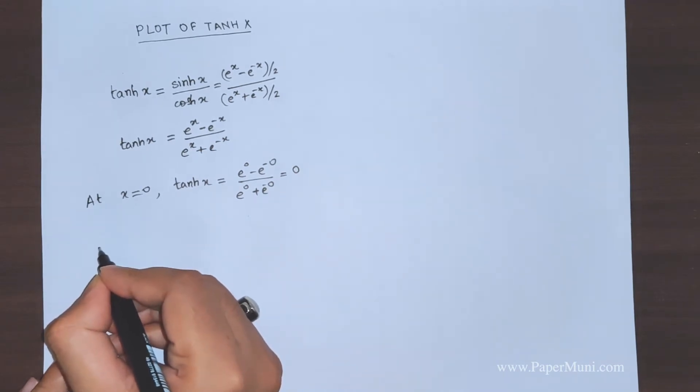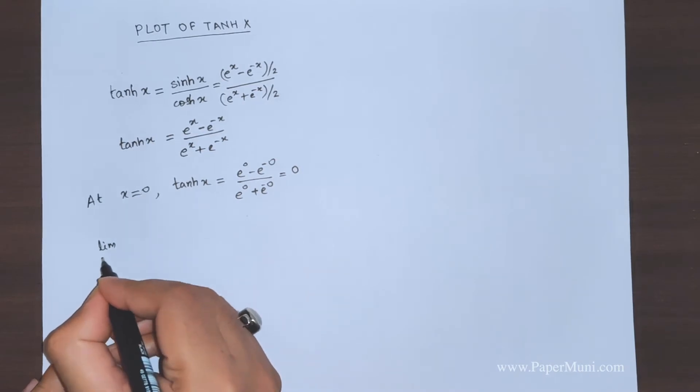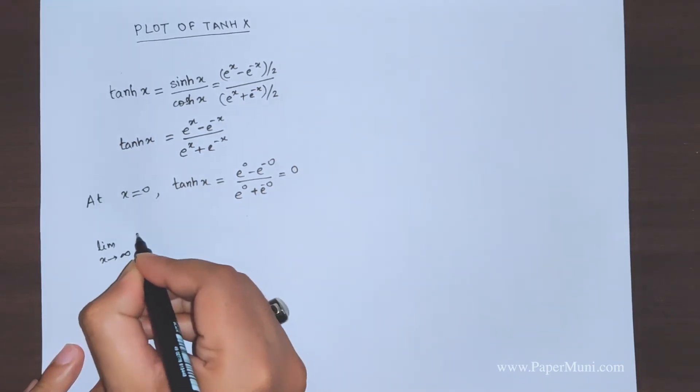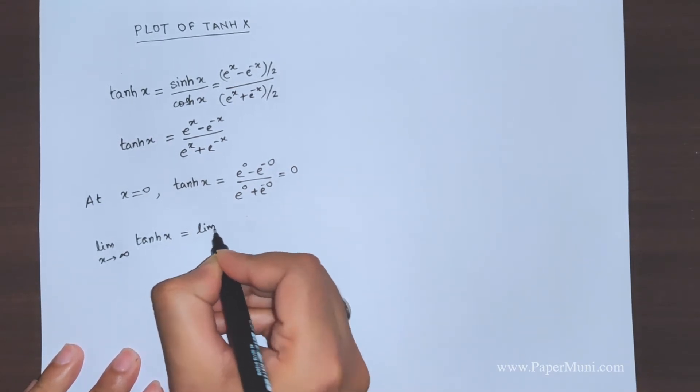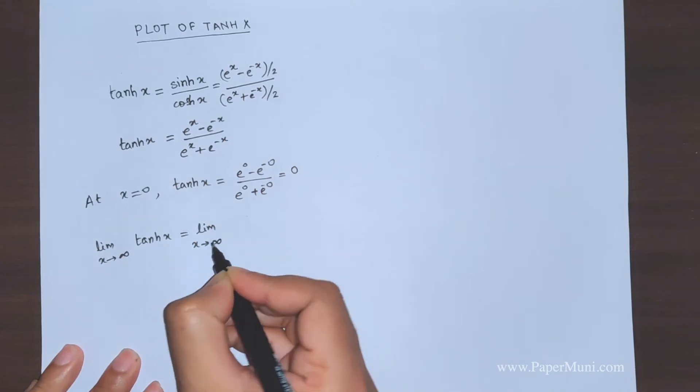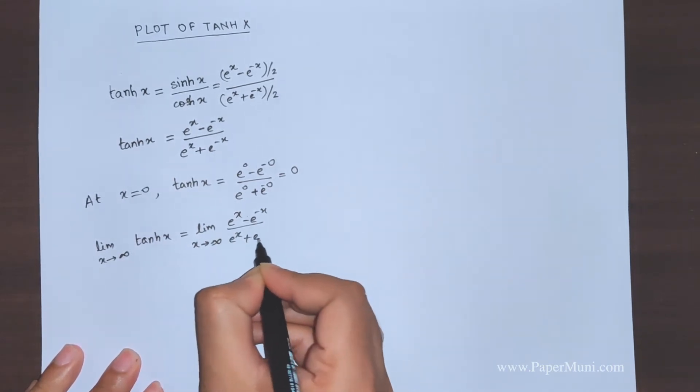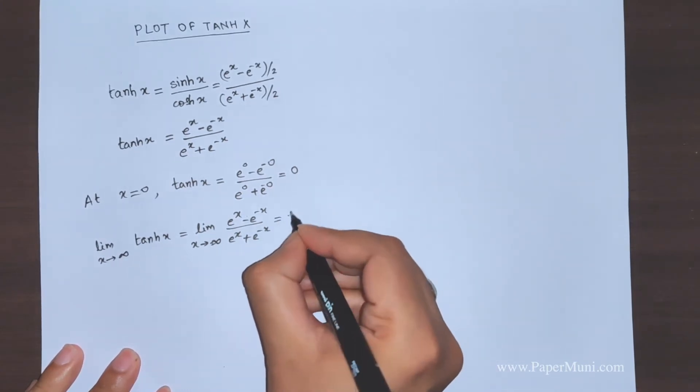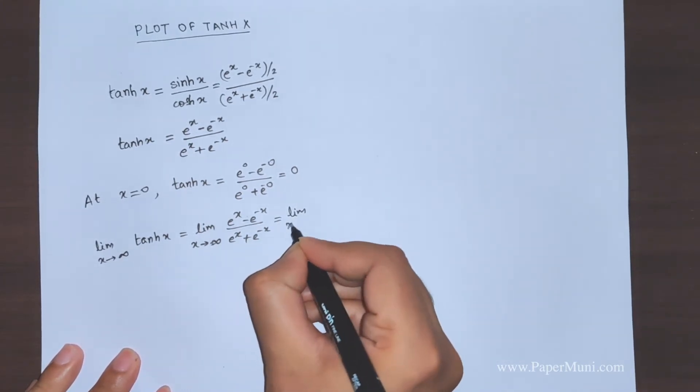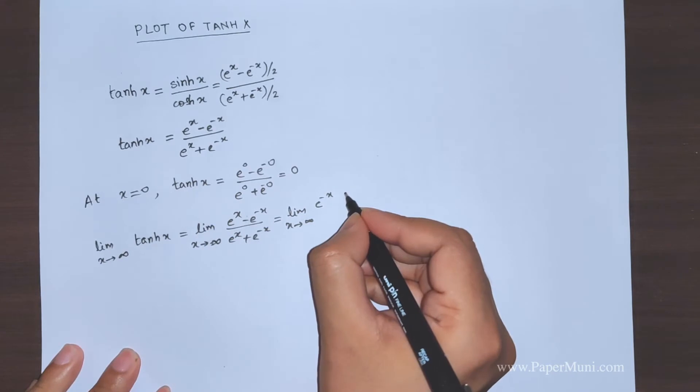Now let's take a limit at the extremities. What happens with very large values of x? Limit as x tends to infinity. If we expand using the definition (e^x - e^(-x))/(e^x + e^(-x)), to find the limit we'll take e^(-x) common.